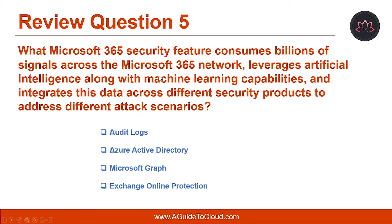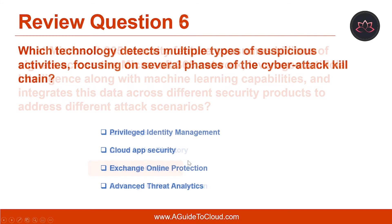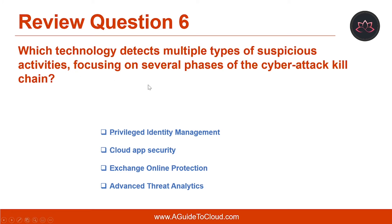Let's look at question number five. Which Microsoft 365 security feature consumes billions of signals across the Microsoft 365 network, leverages artificial intelligence along with machine learning capabilities, and integrates this data across different security products to address different attack scenarios? The correct answer is Microsoft Graph.